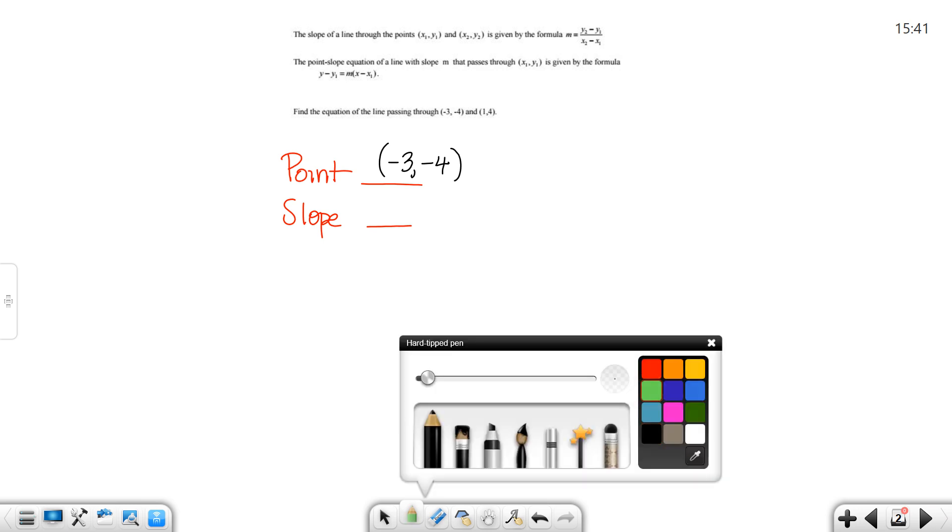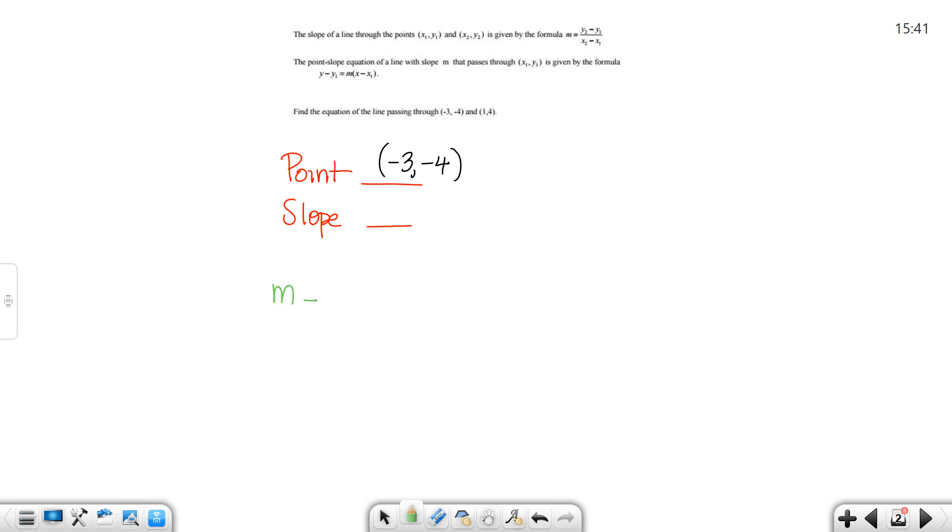The formula for the slope is m equals y₂ minus y₁ over x₂ minus x₁. In this particular problem, we have negative 3 is an x, negative 4 is a y, 1 is an x, and 4 is a y. This one comes from the first ordered pair, so I'll give it a 1, and this one the second ordered pair, so I'll give it a 2. So, if I plug into my green slope formula, y₂ is 4 minus y₁ is negative 4, x₂ is 1 minus x₁ is negative 3.